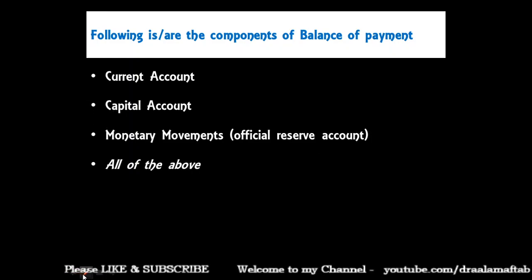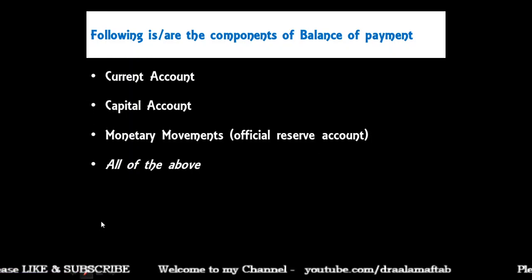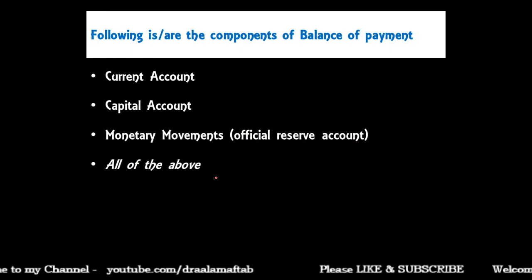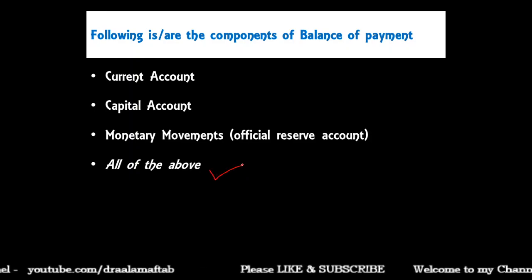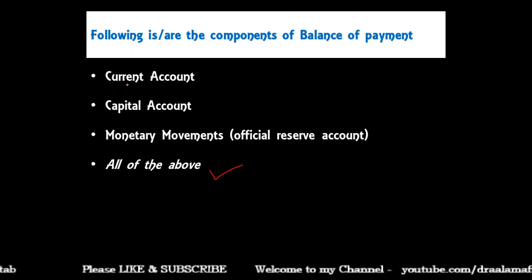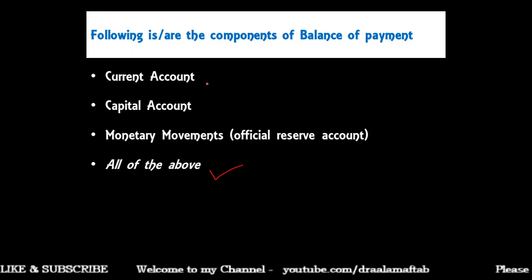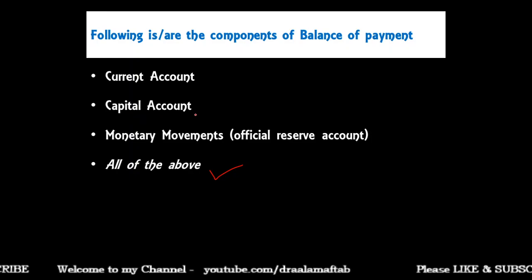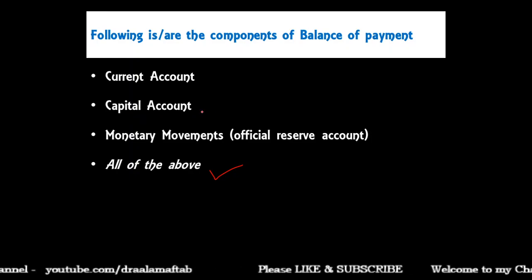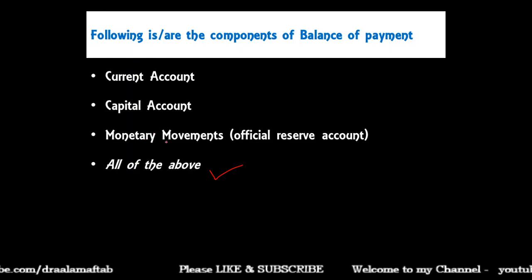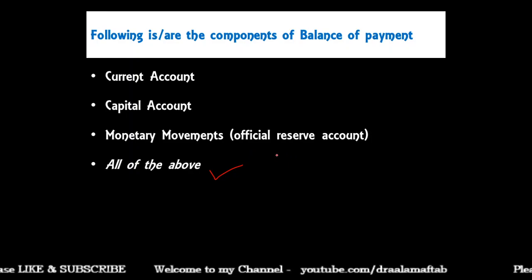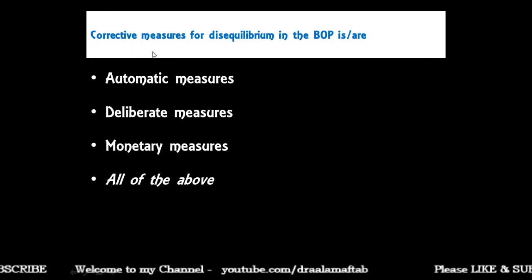Next: following are the components of balance of payment — current account, capital account, monetary movements, official reserve account, or all of the above? The correct answer is all of the above. The current account includes all visible and invisible trades; the capital account includes all foreign direct investment, banking flows, and capital flows; monetary movements include SDRs, gold, and foreign exchange reserves.